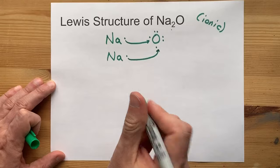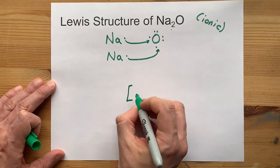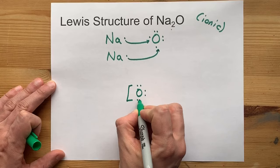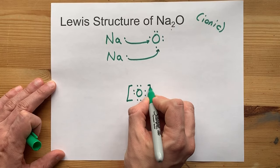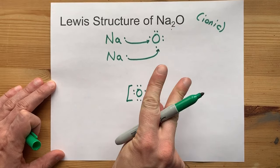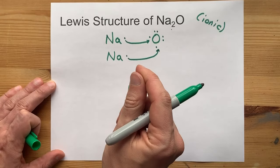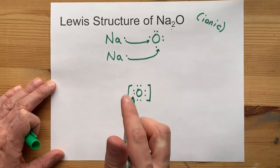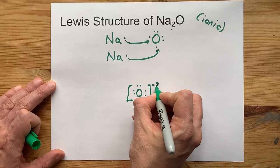Let's draw that complete Lewis structure, though. That's what you came for. Oxygen now has a full 8 electrons, and because that's 2 more than it brought with it, remember it brought 6, we give it a minus 2 charge.